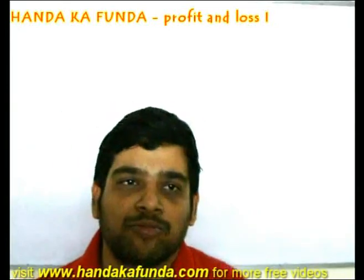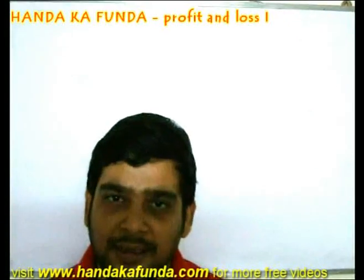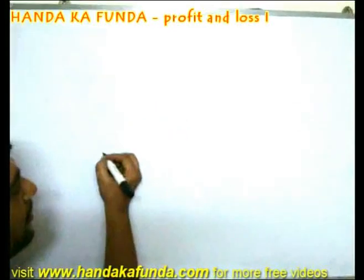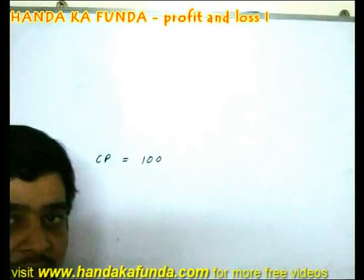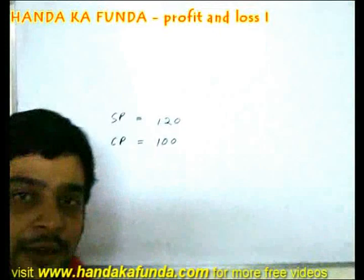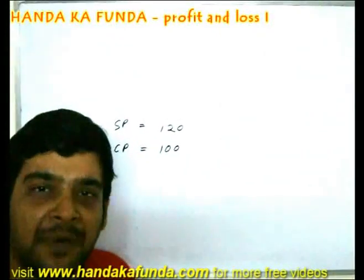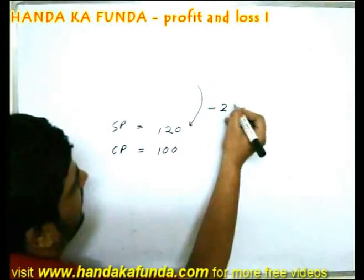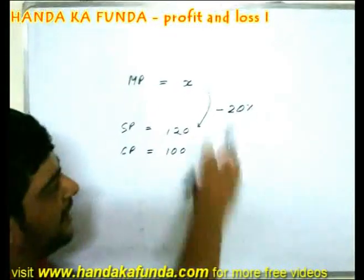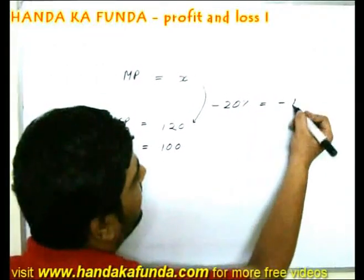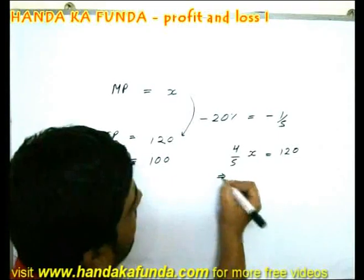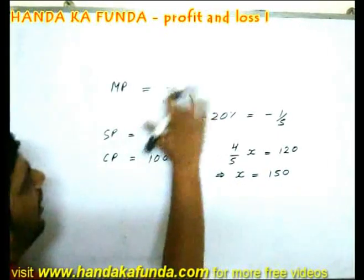Suppose there is a product on which you are planning to make a profit of 20% and give a discount of 20%. What should be the markup percentage? Let us assume the cost price is 100 rupees. You want a profit of 20 rupees, so the selling price should be 120 rupees. You also want to offer a discount of 20% on the marked price X. 20% is reduced, meaning four-fifths of X equals 120.